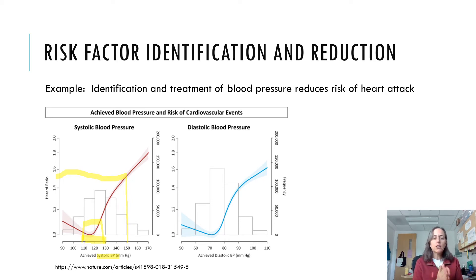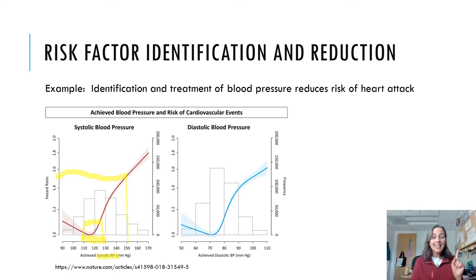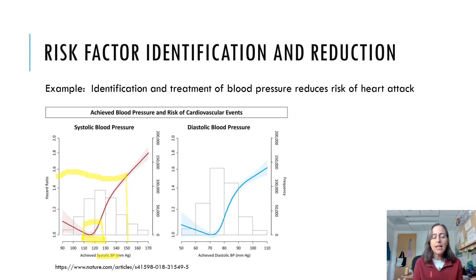Then studies asked: what if we treat people's blood pressure — have them exercise more, eat a healthier diet, put them on medications — and through our interventions lower their blood pressure, does that also lower their risk of cardiovascular events? That's not always a given in medicine and health, but yes, they found that when you intervene and treat blood pressure through diet, exercise, and medications, you also reduce the risk of cardiovascular disease.